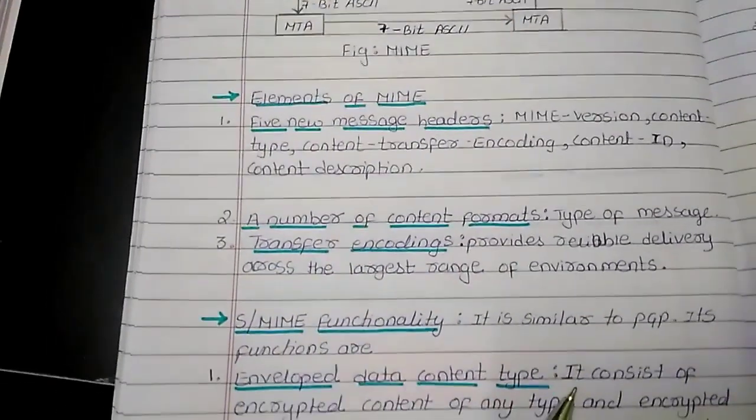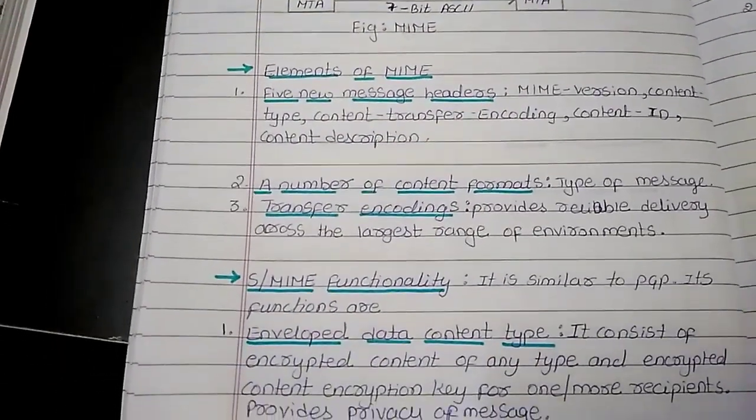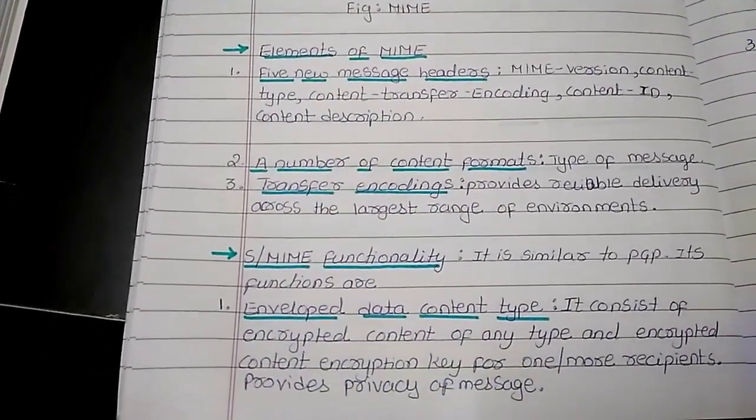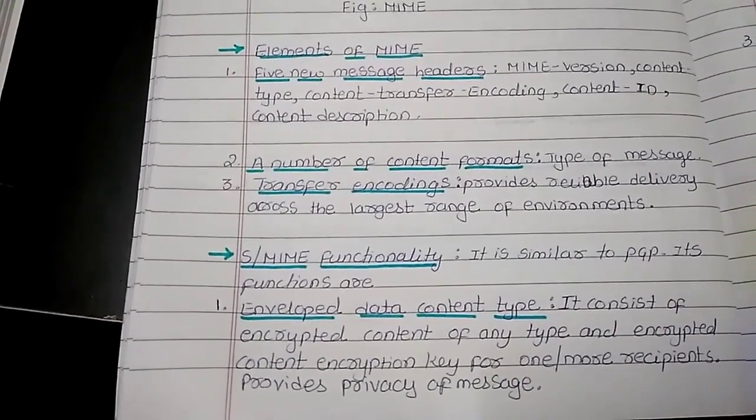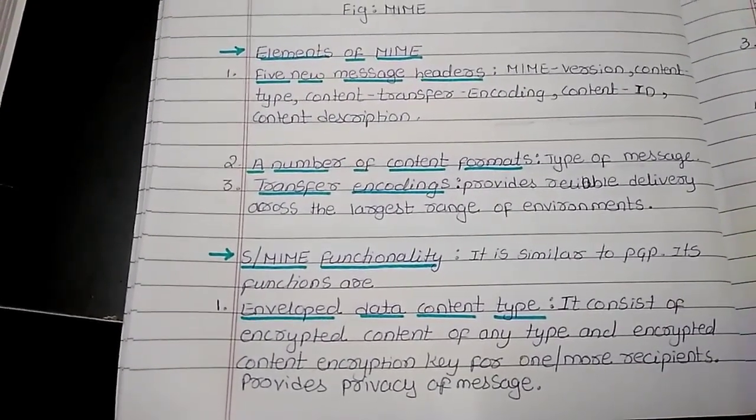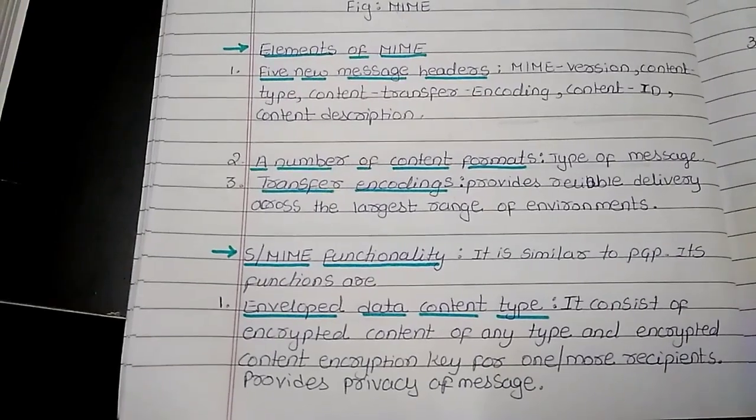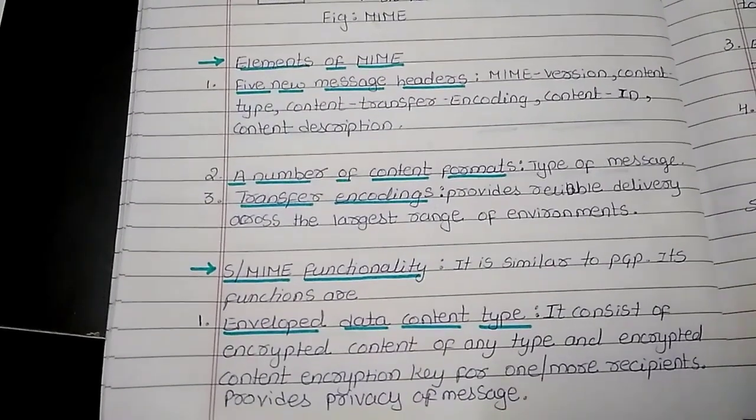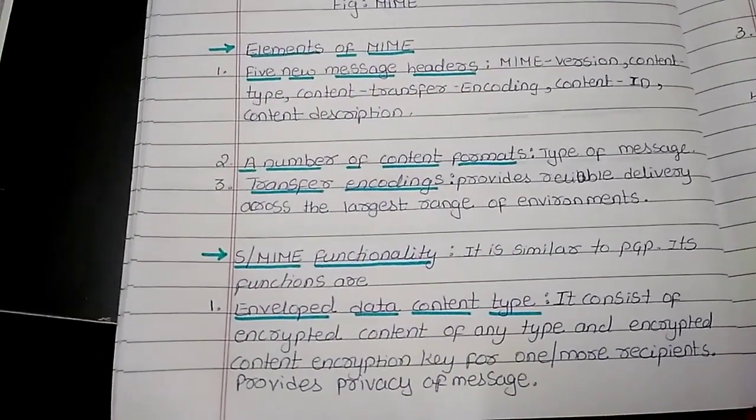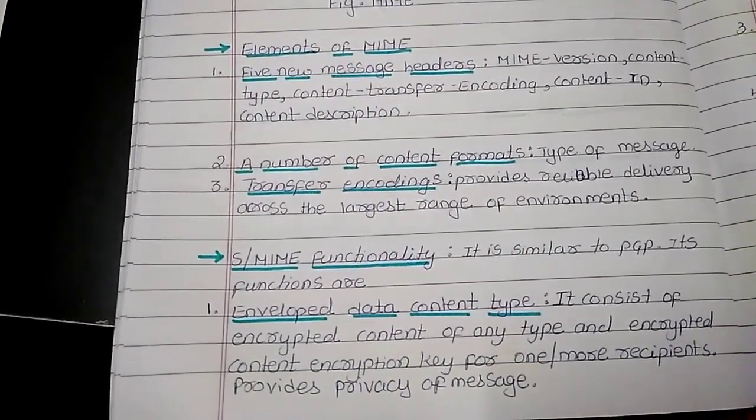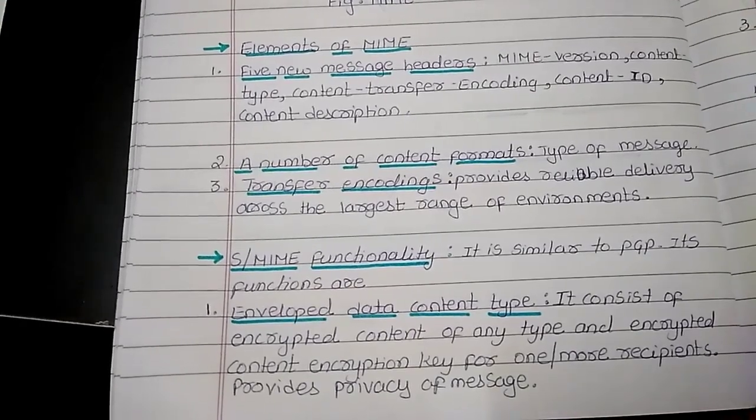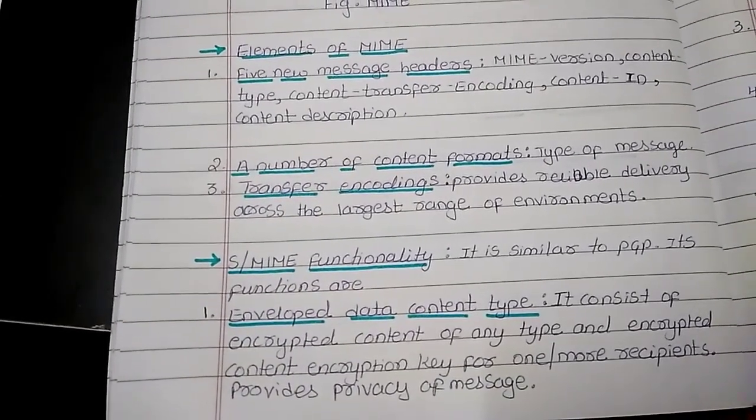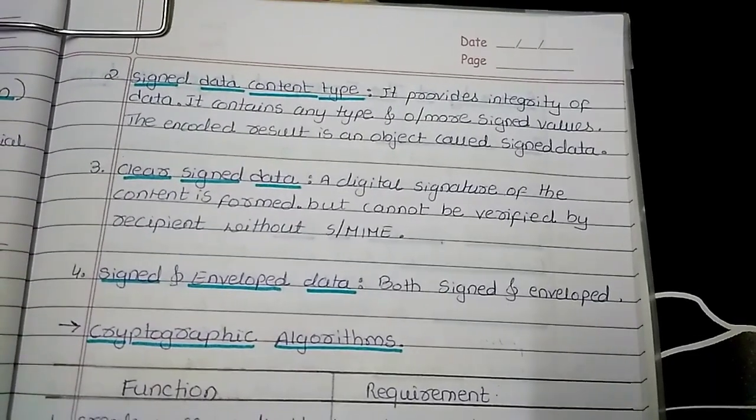Now let us move on to SMIME. The SMIME functionality is similar to PGP. Its functions include enveloped data content type, which provides privacy of messages consisting of encrypted content of any type and encrypted content encryption keys for one or more recipients. The second function of SMIME is signed data content type.